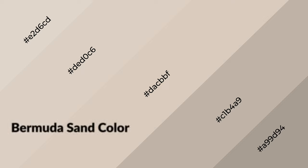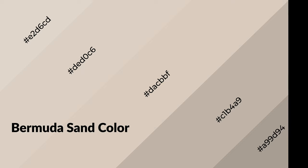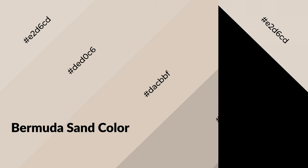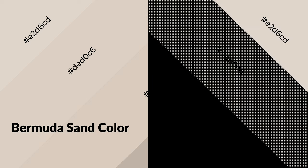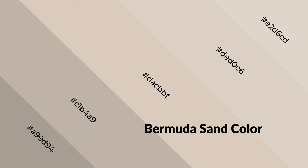Bermuda sand is a warm color and it emits cozier and active emotions. Warm colors are symbols of warmth, fire, heat, and sunshine. It also evokes joy, passion, love, and even anger. You can see them used in restaurants and gyms.